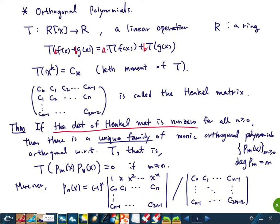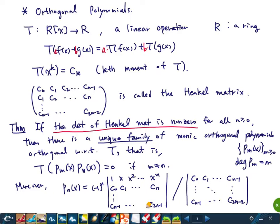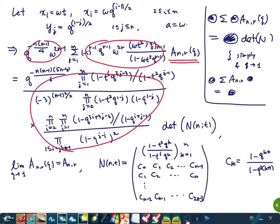Is this Hankel matrix familiar? We saw it before. Except for the first row, matrix N and the Hankel matrix look exactly the same — only the first rows are different. So there must be some connection between them.